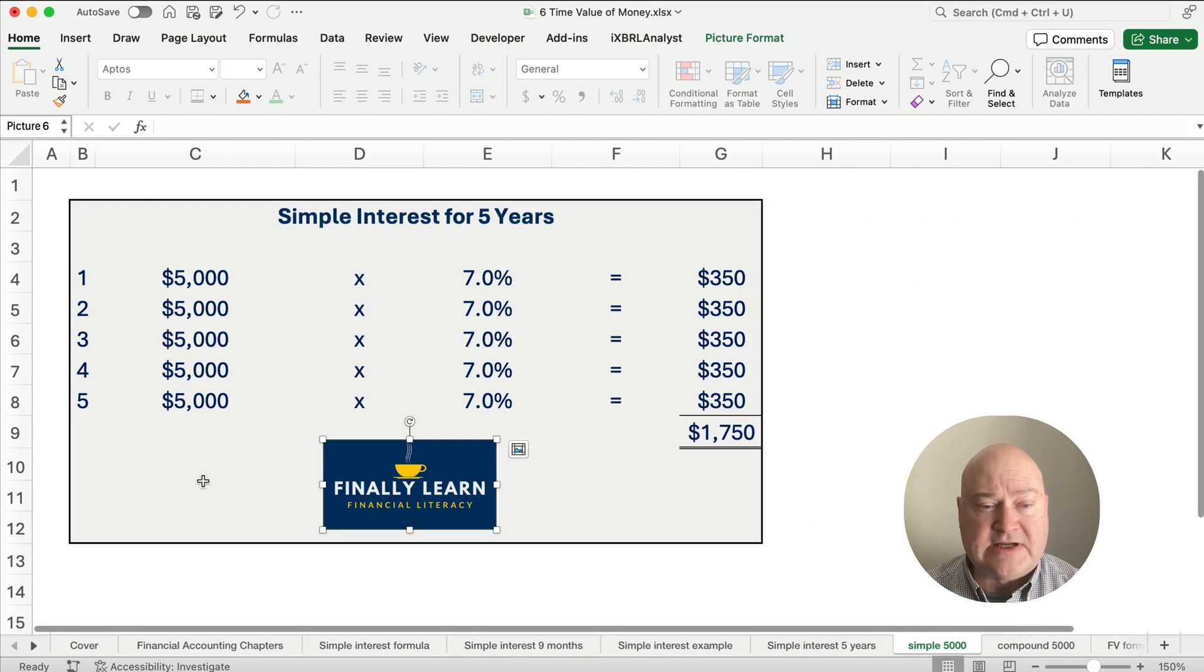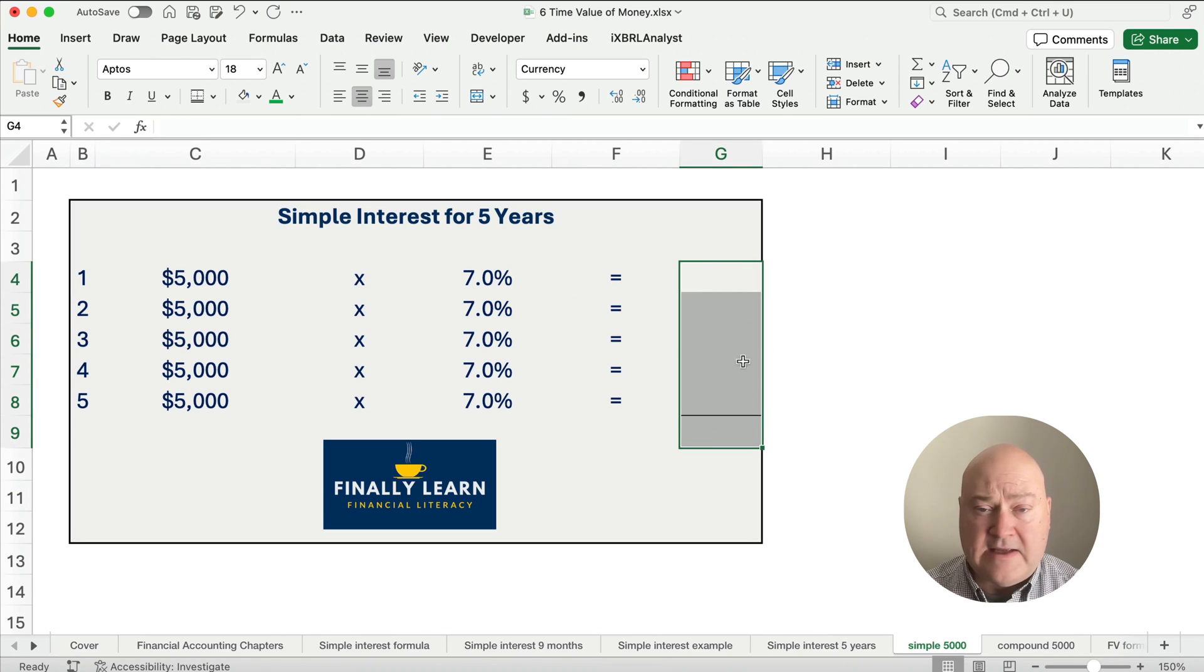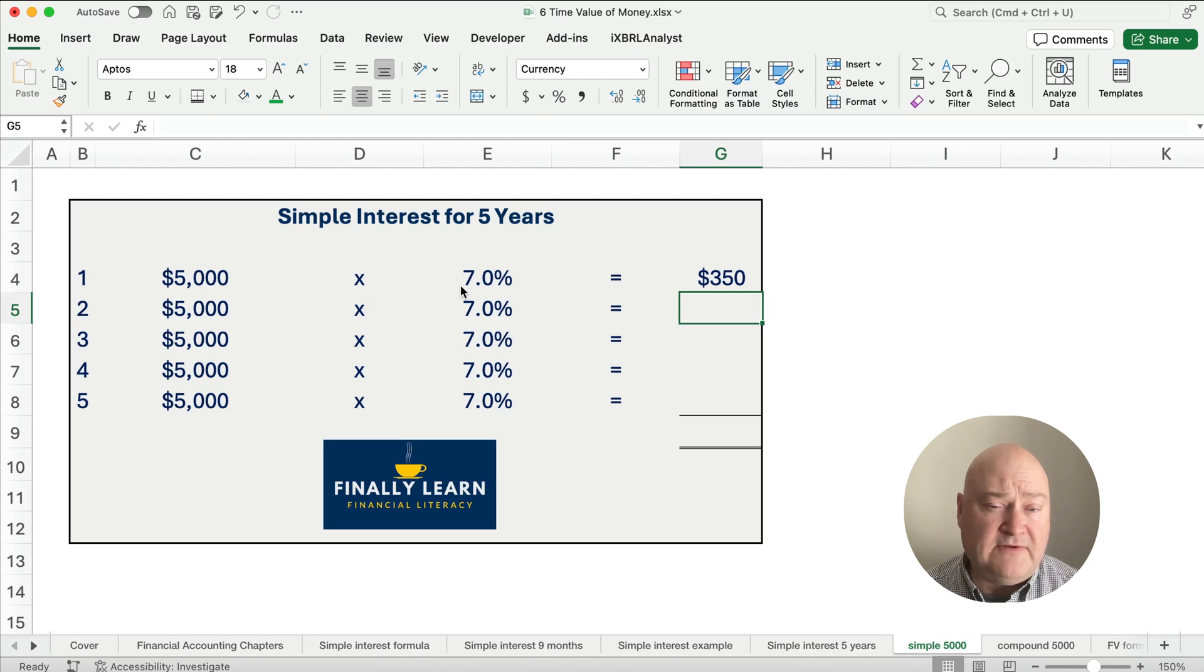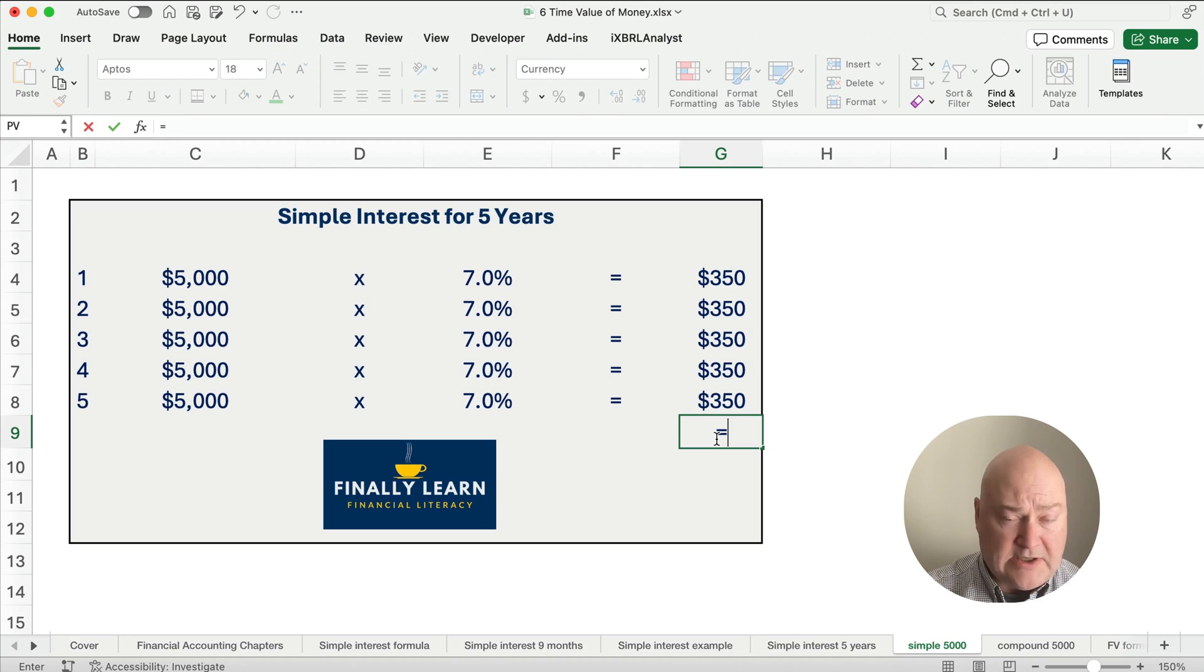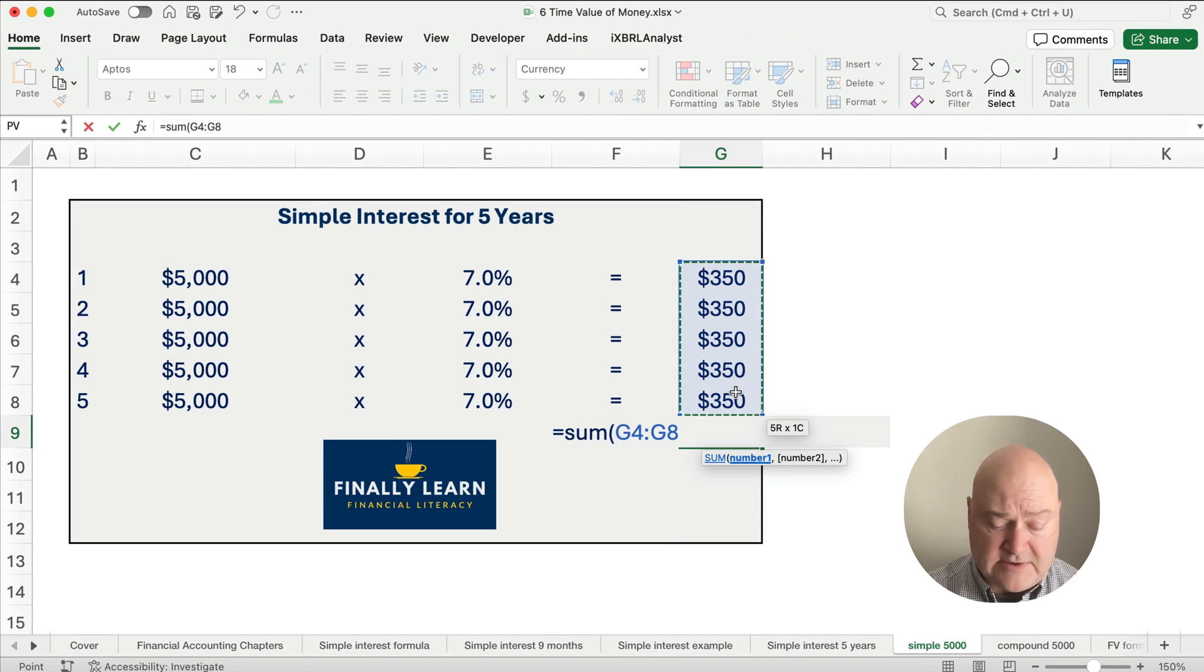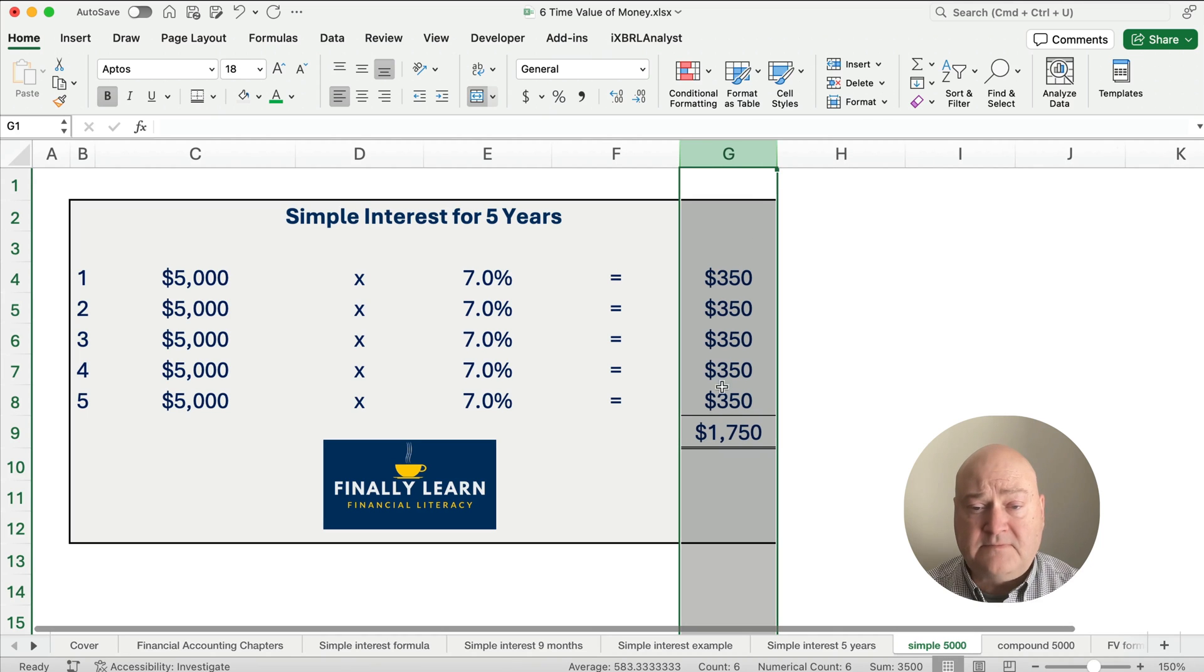Another way to think about this simple interest, you could take 5,000 times 7%. If we did 5,000 times 7%, how much is that for one year? It's $350. For the second year, third year, fourth year, fifth year, it's all going to be $350. So what's the total interest? We can do the sum here of this entire column for the five years. The sum of $350 five times is going to be $1,750. So this is our answer, $1,750.